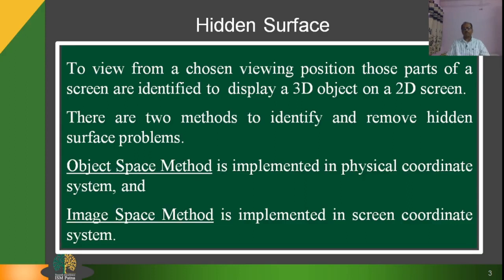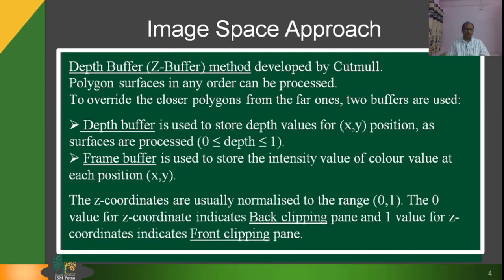When we want to display a three-dimensional object on a two-dimensional screen, we need to identify those parts of a screen that are visible from a chosen viewing position. The methods we use include the depth buffer, that is the Z-buffer method, which is an image space approach developed by Catmull. In it, each surface is processed separately, one pixel position at a time across the surface. The depth values for a pixel are compared and the closest surface determines the color to be displayed in the frame buffer.